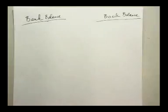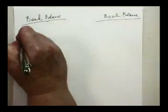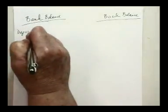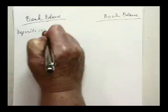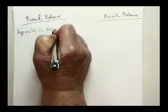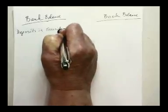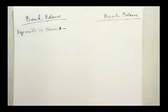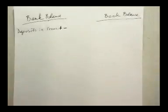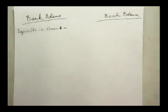So the first thing we're going to look for are those outstanding items. As the keepers of the books, the theory is that we have recorded everything that happened. But what is it about the bank that would make their balance different — because they don't know about everything that we've done? If you've read the chapter, we have what we call deposits in transit. All that means is that we have gone to the bank and made a deposit and recorded it in our books, but the bank doesn't know about it yet on the day they're cutting that statement.